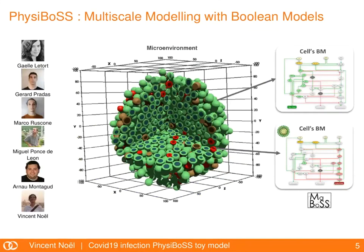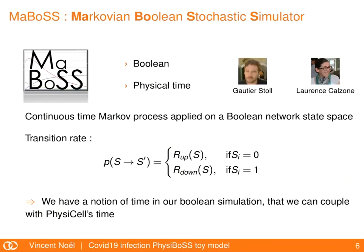PhysiBoss was developed initially at Curie but is now a collaboration between Curie and Barcelona. The cells actually run a simulation software called MaBoSS. Briefly, MaBoSS provides the ability to simulate Boolean networks with physical time — developed by Gautier Stoll and Laurence Calzone at Curie. For each transition, rates are added to have a notion of time, and this can be coupled with PhysiCell time to run real simulations together.